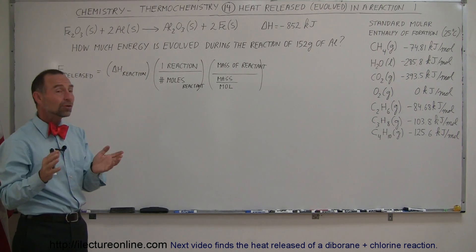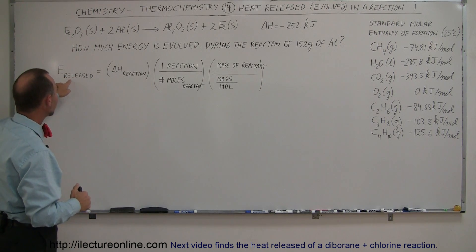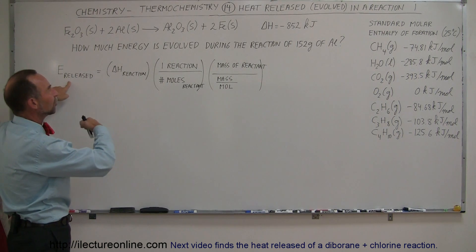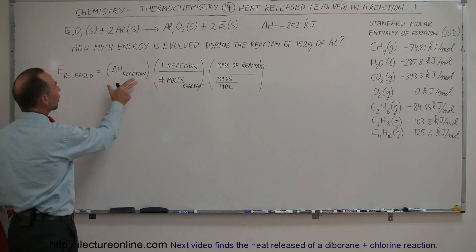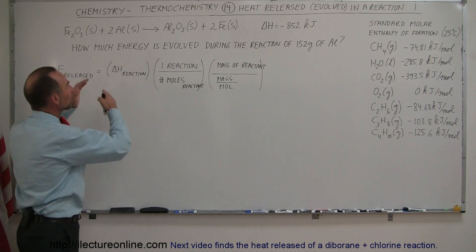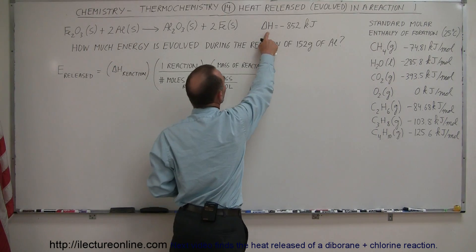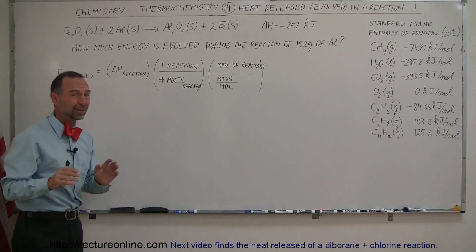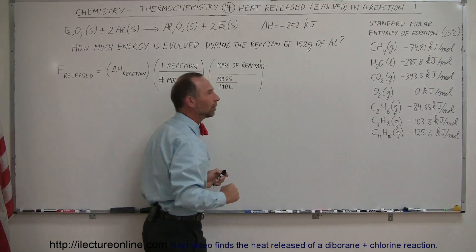In order to do that, we have a handy equation. We start out trying to calculate the energy release — that's really what they're asking for when they say how much energy is evolved. We start with the energy of the reaction, the delta H, the enthalpy. If this reaction were taking place at molar quantities, the heat released would be 852 kilojoules. But we're limited by the fact that we only have 152 grams of aluminum.